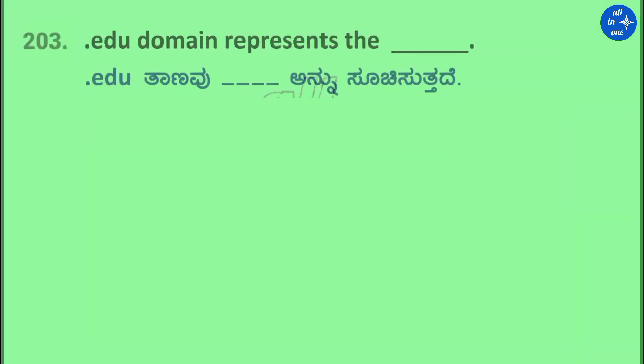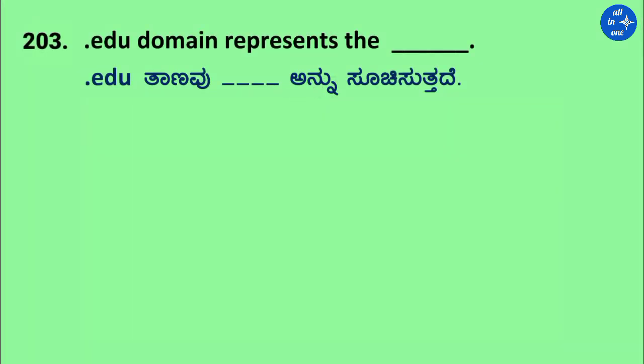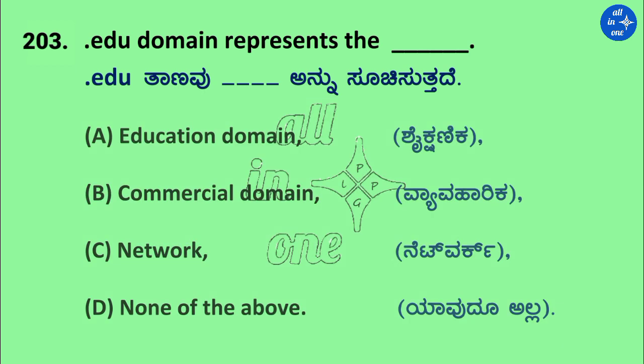Question: The .edu domain represents the dash. Options: Education domain, Commercial domain, Network, and None of the above. Right answer is Education domain.